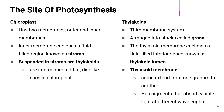Moving on to chloroplasts — this is a double membrane organelle that has an outer and inner membrane. The inner membrane encloses the fluid-filled region known as the stroma. Suspended in the stroma are structures known as thylakoids. Thylakoids are interconnected flat disc-like sacs in chloroplasts, and they are generally a third membrane system arranged into stacks called grana. It has what we call a thylakoid lumen, which is a fluid-filled interior space, and a membrane known as the thylakoid membrane.